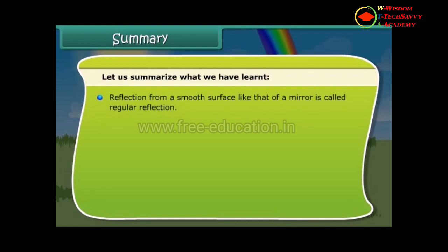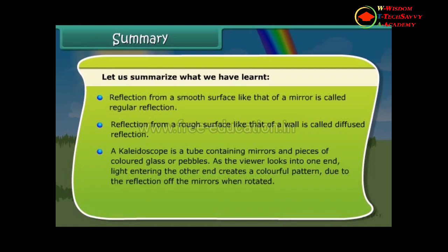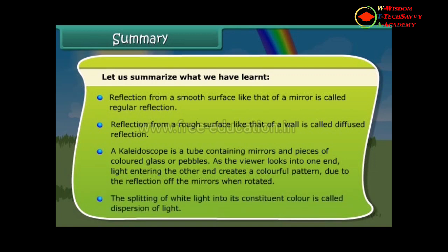Reflection from a smooth surface like that of a mirror is called regular reflection. Reflection from a rough surface like that of a wall is called diffused reflection. A kaleidoscope is a tube containing mirrors and pieces of colored glass or pebbles; as the viewer looks into one end, light entering the other end creates a colorful pattern due to the reflection of the mirrors when rotated. The splitting of white light into its constituent colors is called dispersion of light.